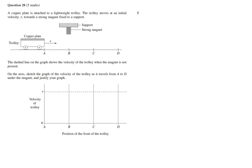This particular question has to do with Faraday's law and Lenz's law. In question 28, we have a trolley with a copper plate that moves under a strong magnet and passes through positions A, B, C, and D.